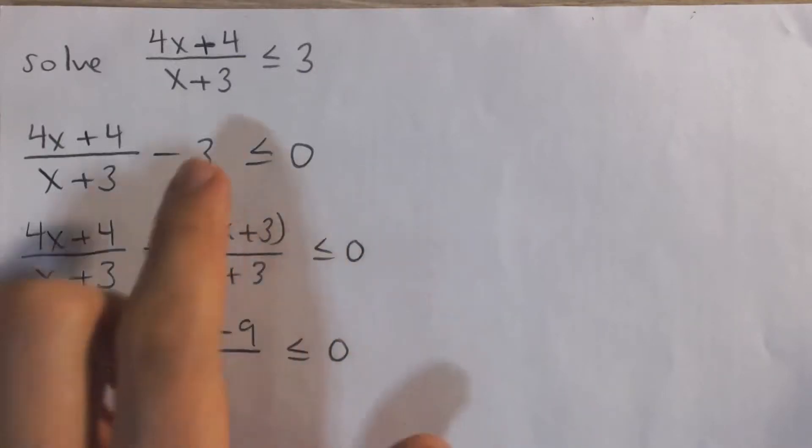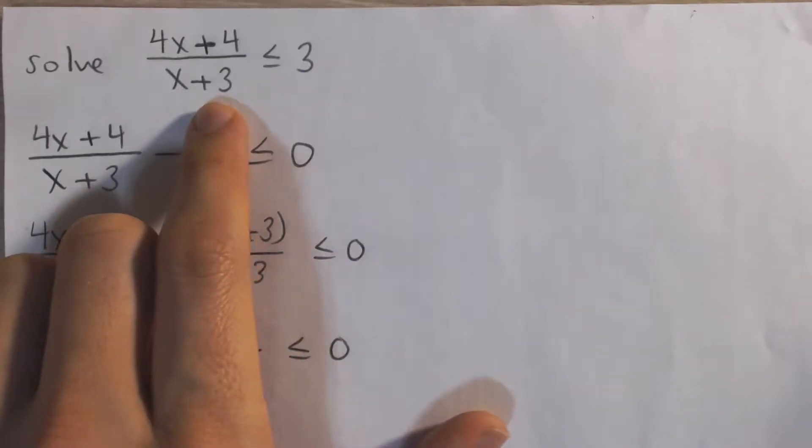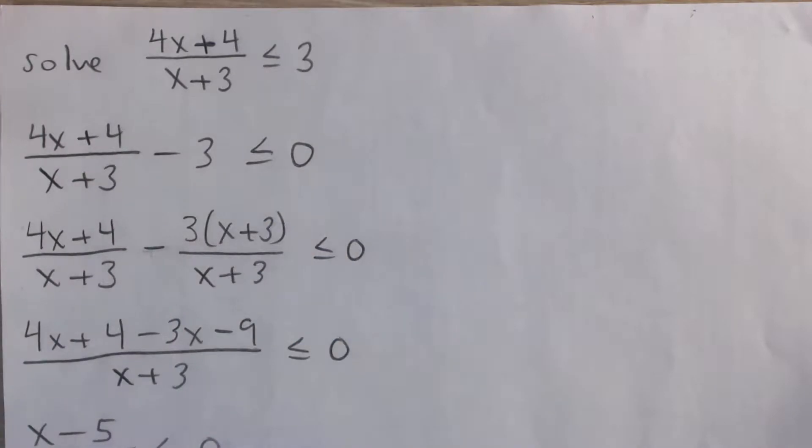Okay, so here we have to solve this rational inequality: 4x plus 4 divided by x plus 3 is less than or equal to 3.